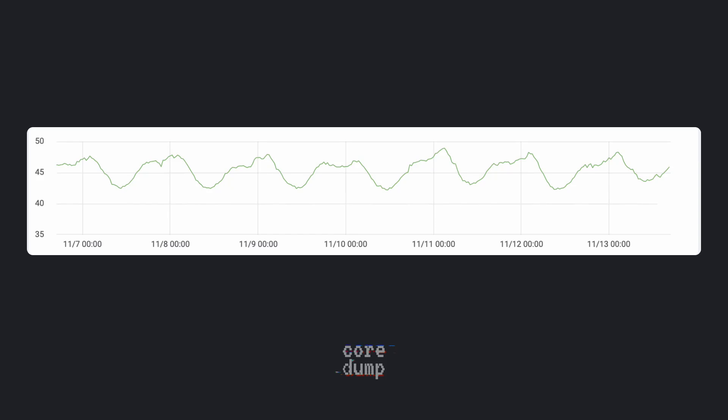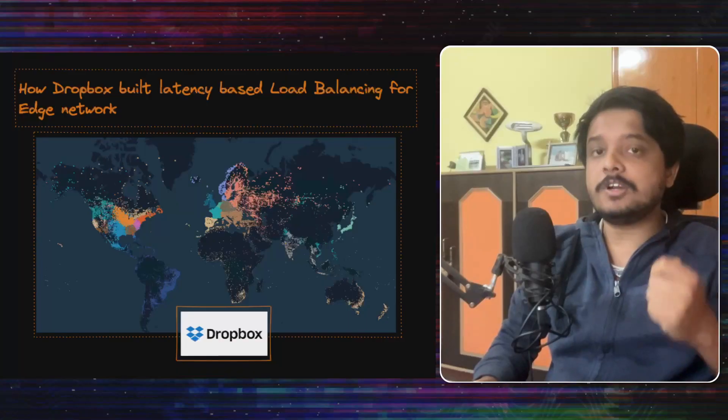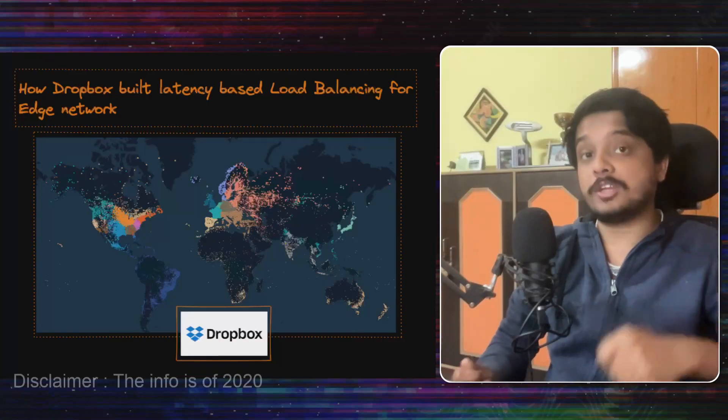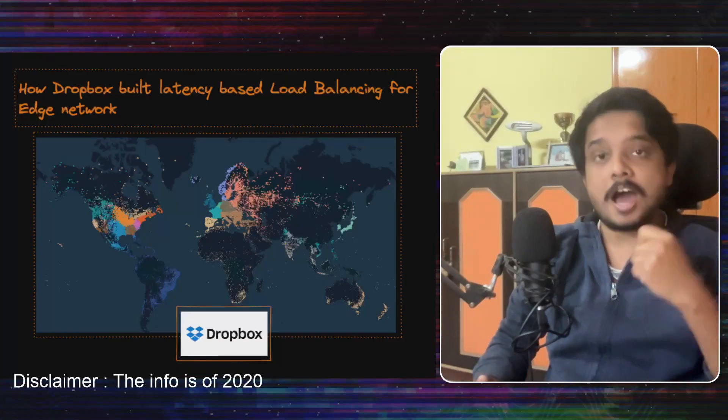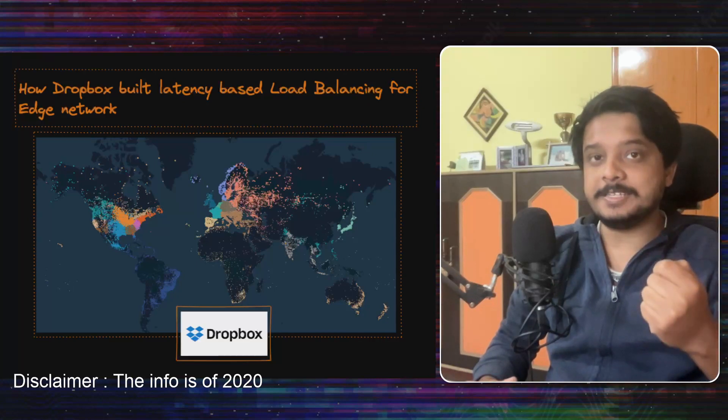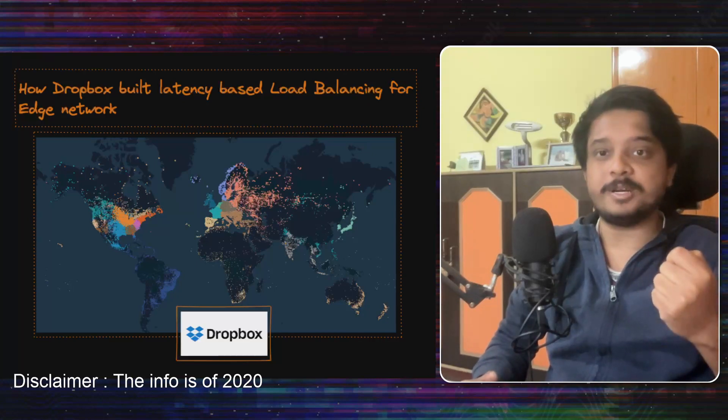This was the P75 latency of Dropbox in the US and this is what they got after they did some optimizations. Today, we will talk about what they did and how they got this performance improvement.